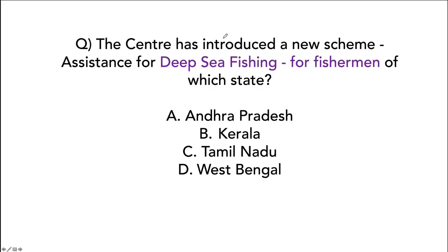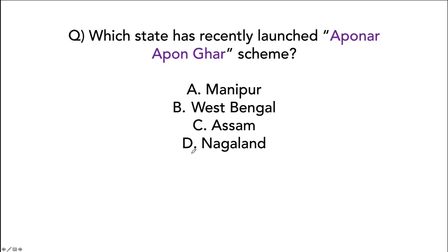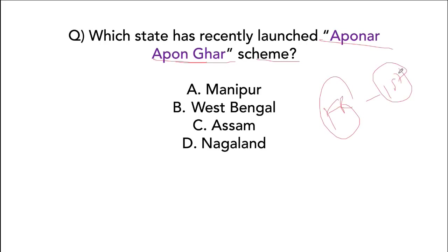The central government introduced a new scheme — Assistance for Deep Sea Fishing — for fishermen of Tamil Nadu. Assam has recently launched the Aponar Apon Ghar scheme, providing financial relief to families wanting to buy their first house, with subsidies from the government.